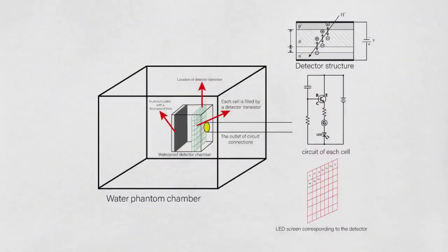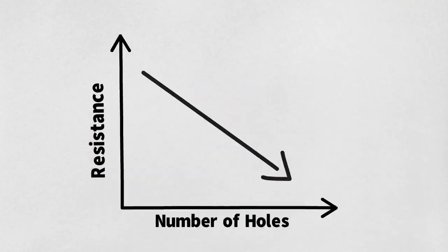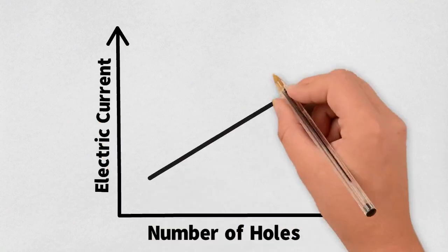Each cell has an individual circuit. With the increase of charge carriers, we'll have lower resistance. That would also increase the generated current.